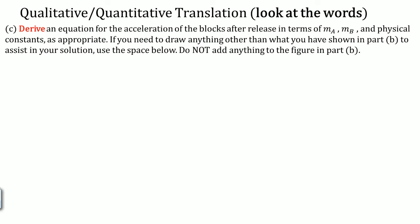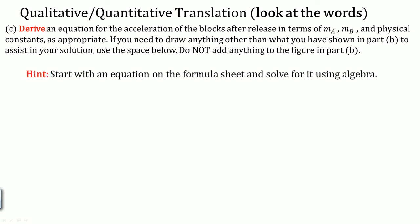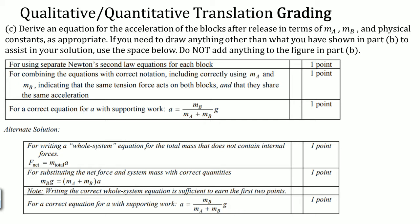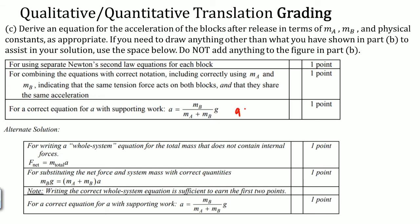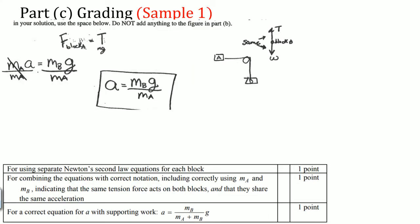The next part will always ask you to derive an equation. Always start from a first-principles point of view using an equation from the formula sheet. The correct approach is to write a separate Newton's second law equation for each block, combine the equations correctly, and arrive at the answer: a = MB·g / (MA + MB). This represents the force of gravity on block B divided by the total mass, which makes sense because block B is the one accelerating the system downward.